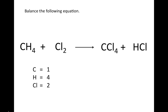On the product side of our chemical equation, we have one carbon atom, one hydrogen atom, and five chlorine atoms. Because we have one carbon atom on the reactant side and one carbon atom on the product side, carbon is already balanced.